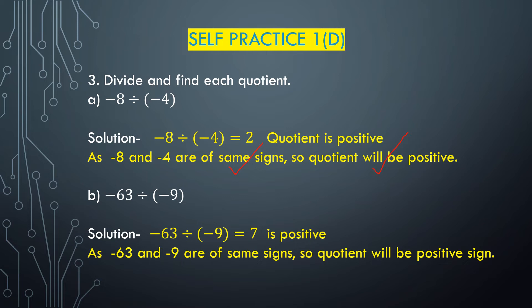Part D: minus 63 divided by minus 9. Here minus 63 and minus 9 are both negative integers — equal sign. When we divide integers of equal sign, the quotient will be positive. We know 9 multiplied with 7 is 63, so minus 63 divided by minus 9 equals 7, which is a positive integer. When dividing equal-sign integers the quotient is positive; opposite-sign integers give a negative quotient.